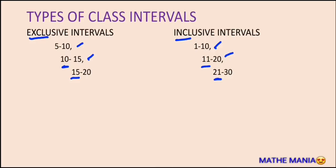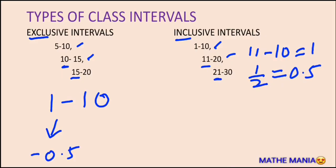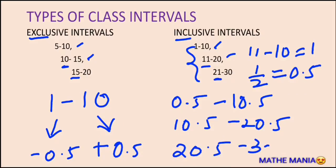We can convert inclusive intervals into exclusive intervals easily. For this, we subtract any upper limit from the next lower limit — like 11 minus 10 equals 1 — and divide this number by 2, which gives us 0.5. To change an interval into an exclusive interval, we subtract 0.5 from the lower limit and add it to the upper limit. This way the three intervals are converted to 0.5–10.5, 10.5–20.5, and 20.5–30.5.